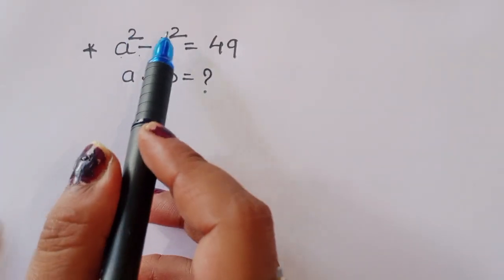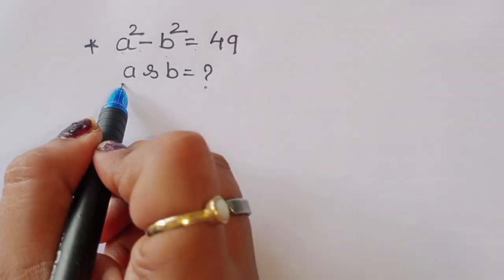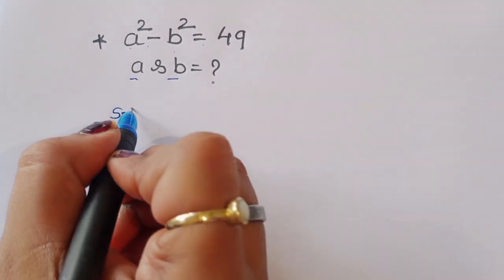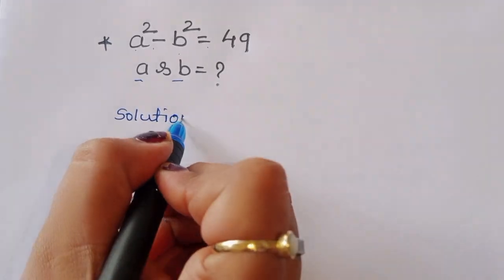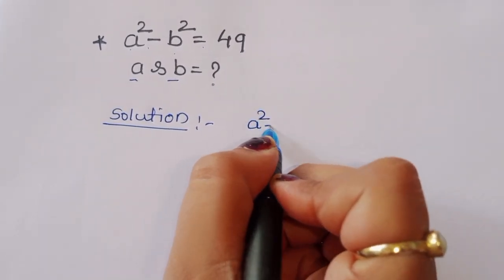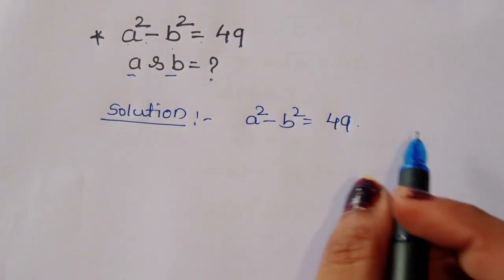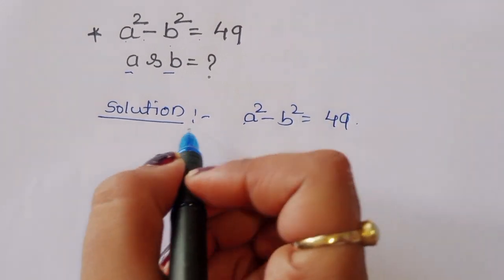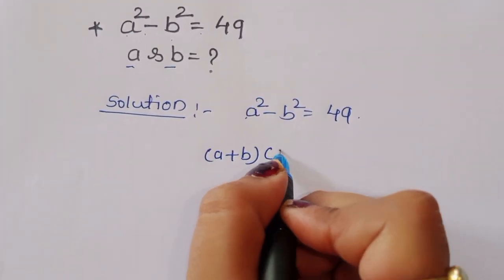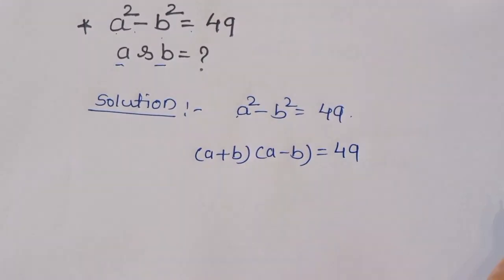The question is: given a² - b² = 49, we have to find out the values of a and b. Using the formula for difference of squares, we can write a² - b² as (a + b)(a - b) = 49.